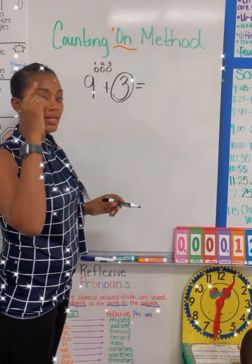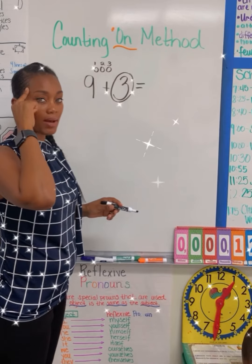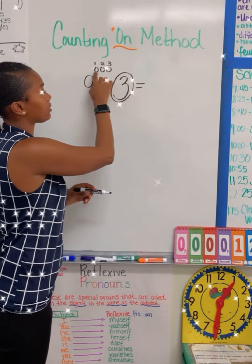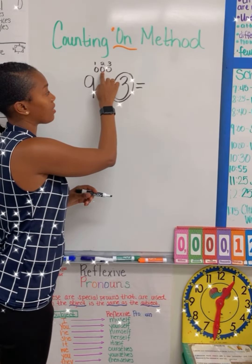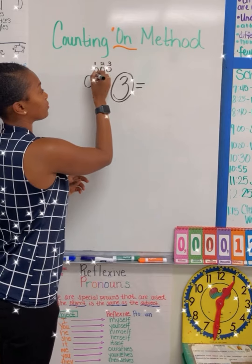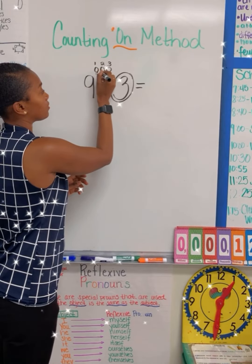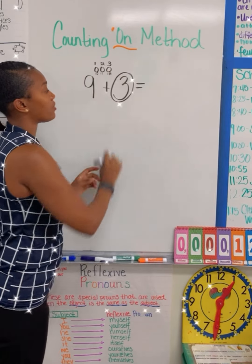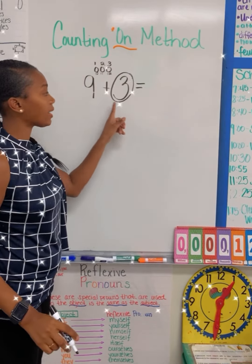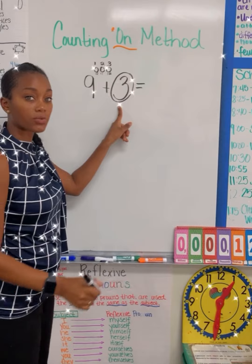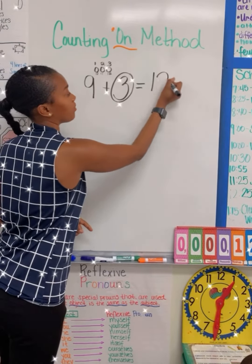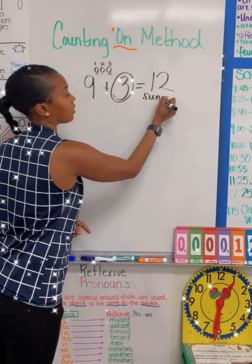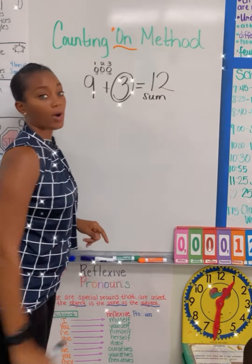We say 9 inside our mind, and then we go 10, 11, 12. Therefore, 9 plus 3 is going to equal the sum of 12.